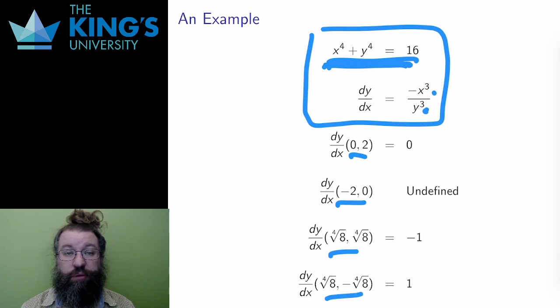0, 2, negative 2, 0, the 4th root of 8 and the 4th root of 8, and then the 4th root of 8 and the negative 4th root of 8. And if you put any of these pairs back into the original equation, you will see that the equation is satisfied. These are points on the locus.